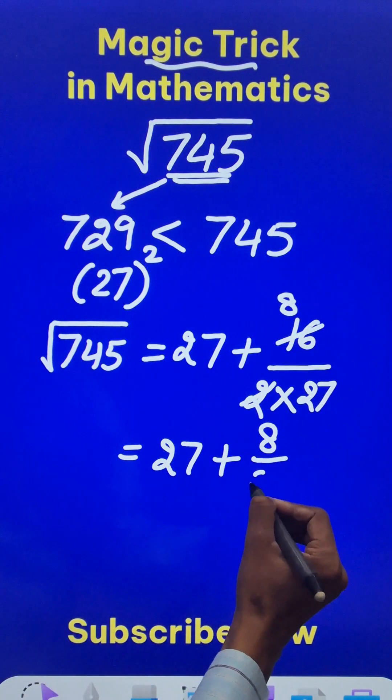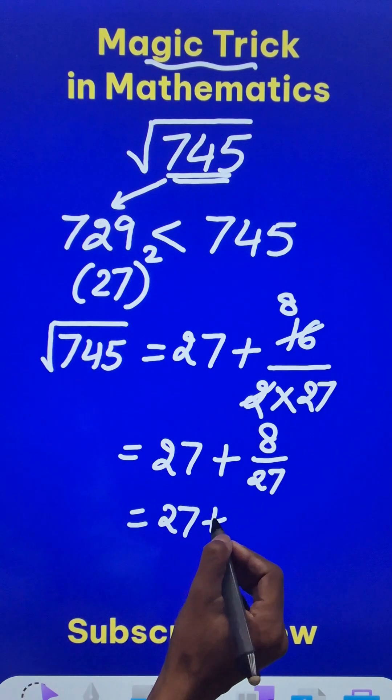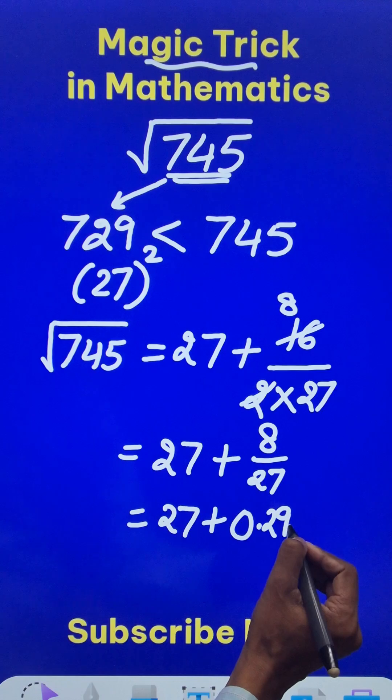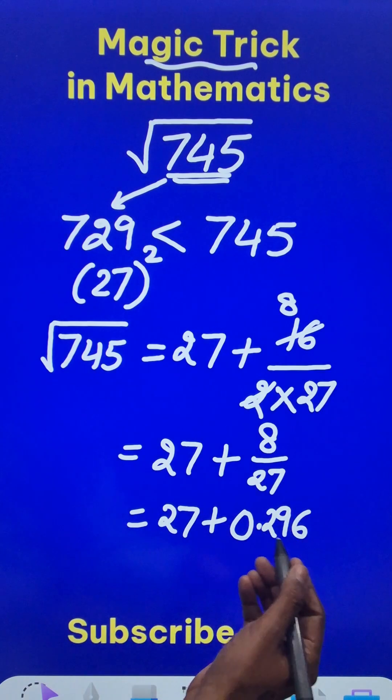And 8 upon 27 happens to be in decimals 0.296, or you can write approximately 0.3.